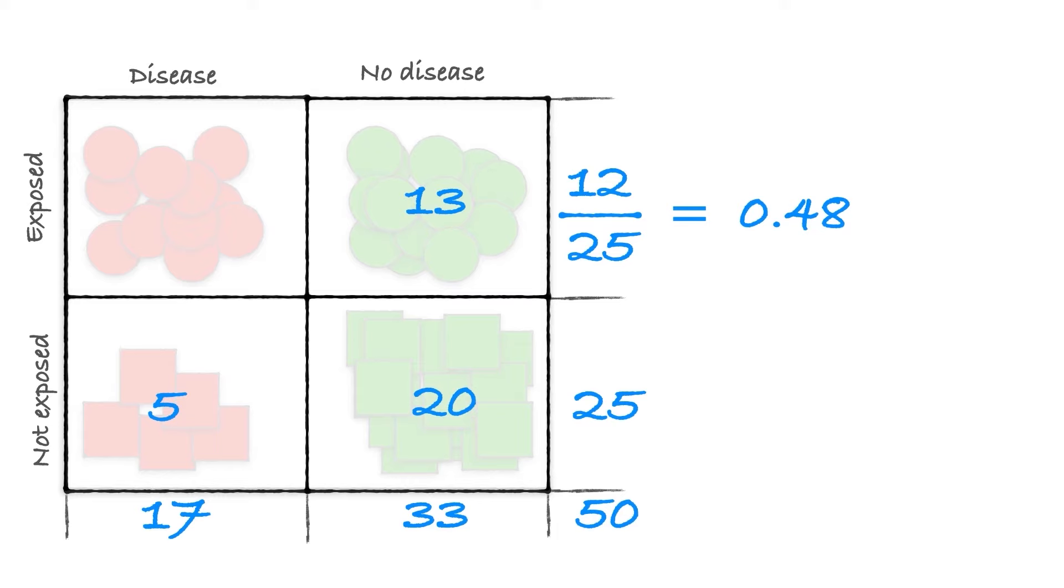I simply say of the 25 smokers, 12 of them got sick, so the risk amongst smokers is 0.48, 48%, and of the non-smokers, of the 25 non-smokers, five of them got sick, so the risk amongst non-smokers is 0.2, 20%.